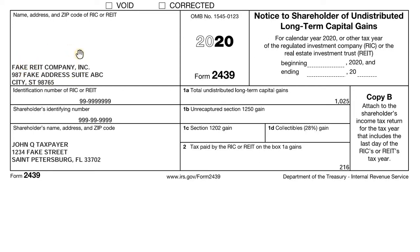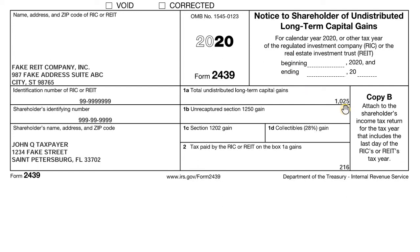Looking at the 2439, it's a simple form that looks a lot like a 1099 dividend statement. You'll have the name of the REIT or RIC, the shareholder's name and address, and then boxes 1a and 2 are the relevant pieces. Box 1a represents your allocable share of the undistributed long-term gains — in this case John Q was allocated $1,025. Box 2 is the tax paid on those long-term gains allocated to John. Remember, this is undistributed, so John hasn't actually received any cash — if he opens his brokerage account, he won't see any long-term gain distribution or cash for this amount.